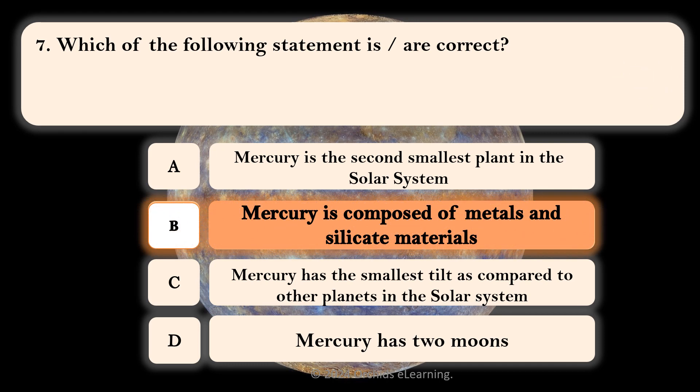Which of the following statements is correct? B. Mercury is composed of metals and silicate materials.